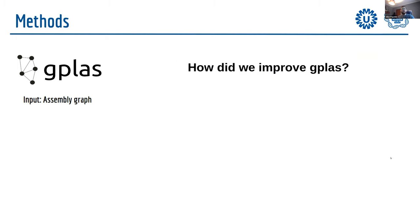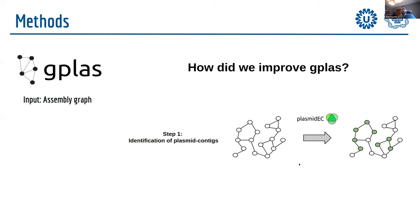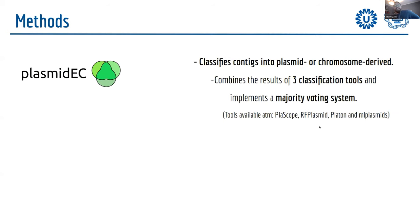We improved this process because the initial step of identifying plasmid-derived contigs was not working very well for E. coli. We modified GPlas so that you can now provide input from any classification tool — you're no longer limited to mlplasmid or PlasmidFlow. Specifically for E. coli, we replaced that step with PlasmidEC, the ensemble classifier. PlasmidEC classifies contigs as plasmid or chromosome-derived by combining results from three different classification tools using a majority voting system.